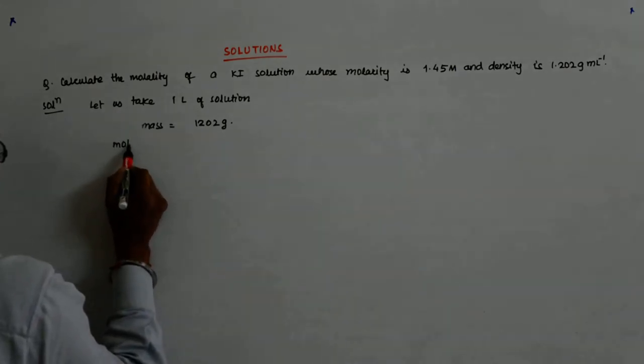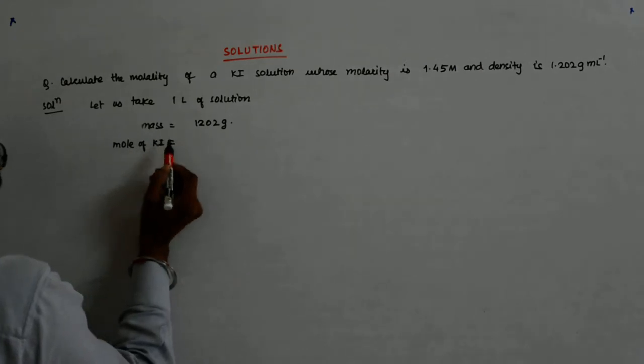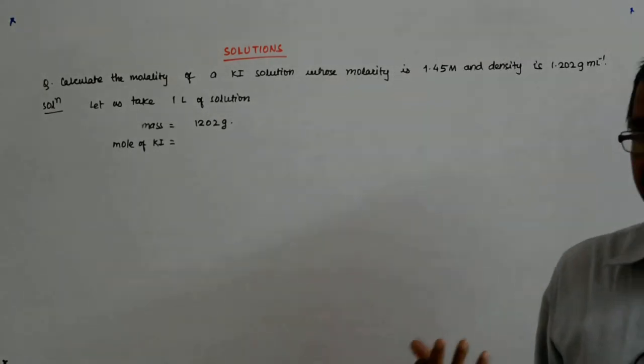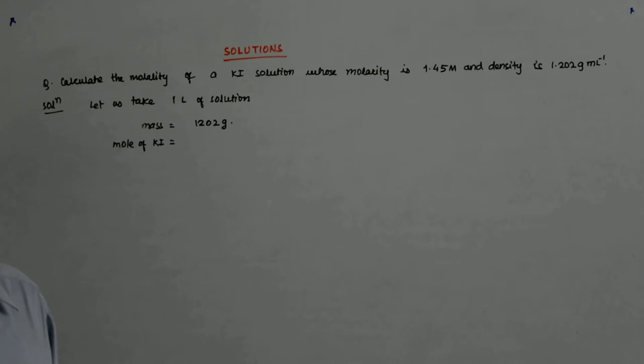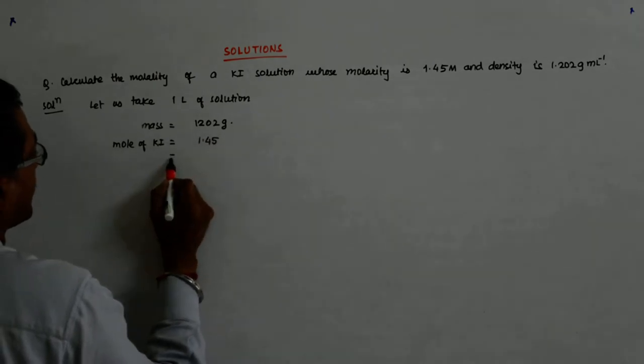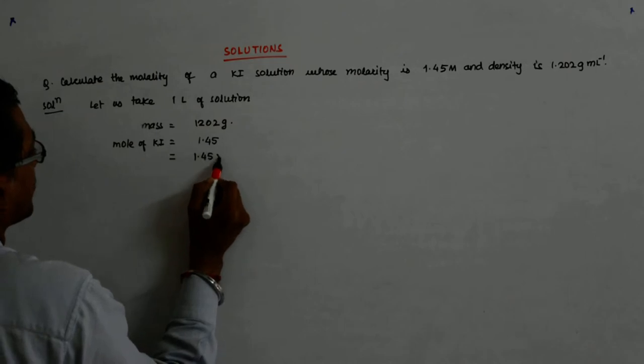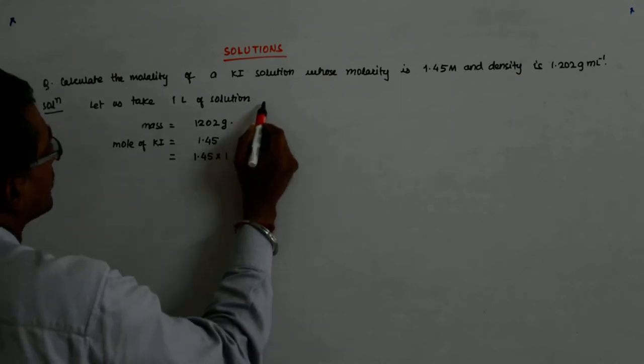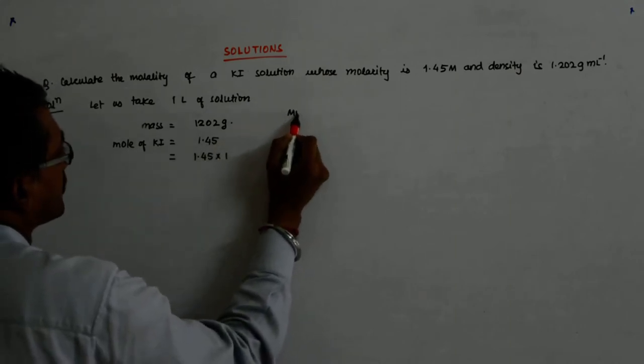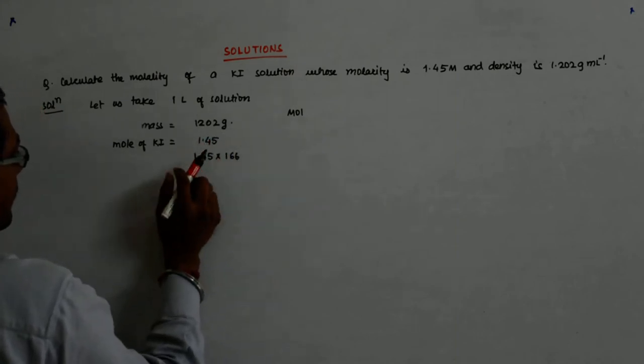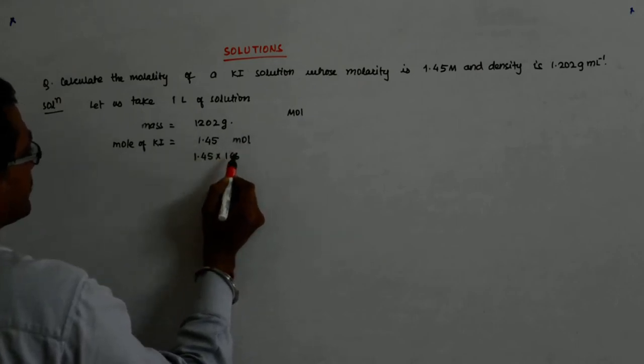Mass is equal to 1.202 grams. Now this has 1.45 mol of KI. Mol of KI is, because 1 liter, what does molarity mean? If you pick up 1 liter of solution, you will be getting 1.45 mol of KI. So mol of KI is equal to 1.45, which is equal to 1.45 multiplied by 166.